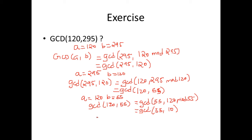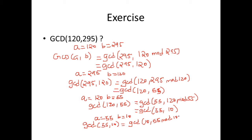Now a is 55 and b is 10. We continue the process: GCD of 55, 10 is nothing but GCD of 10, 55 mod 10. What is 55 mod 10? The remainder is 5. We have not yet achieved 0, so we continue this process until b goes to 0. What we have achieved is GCD of 10, 5.